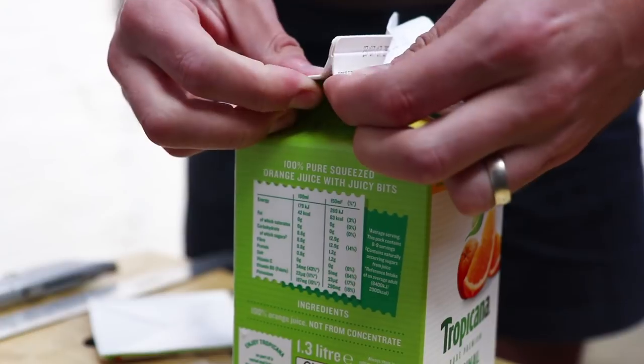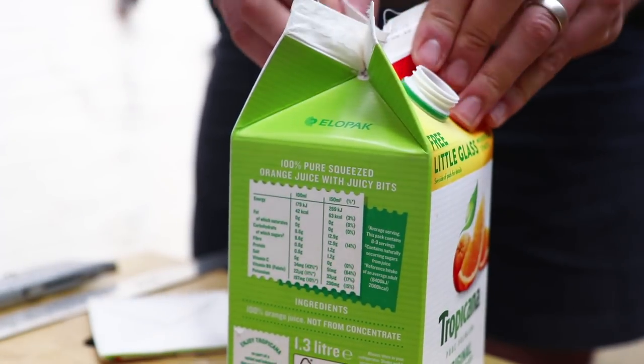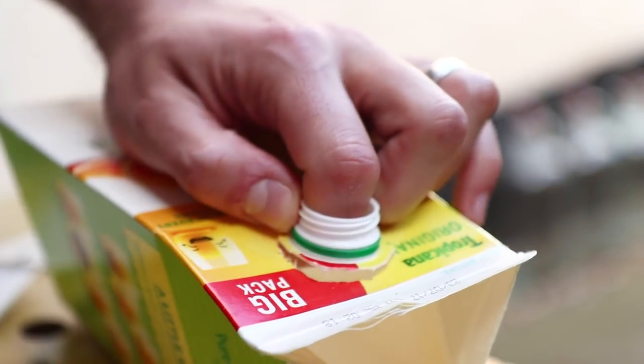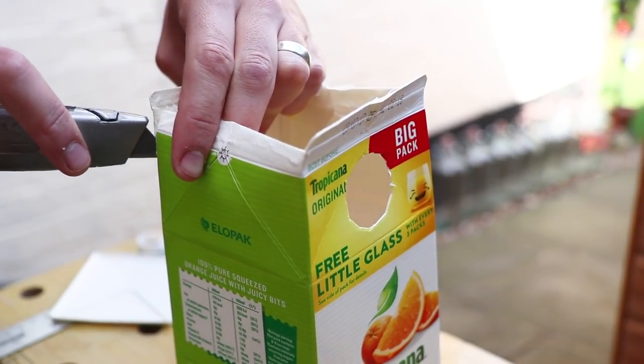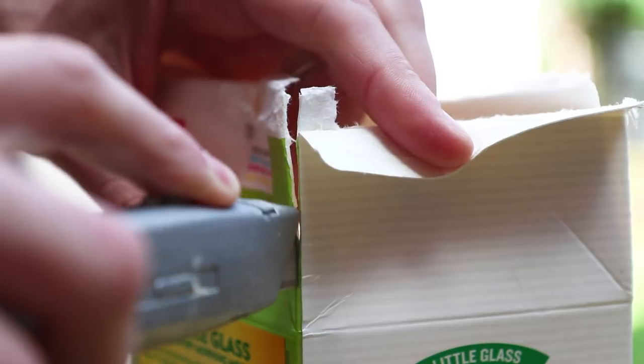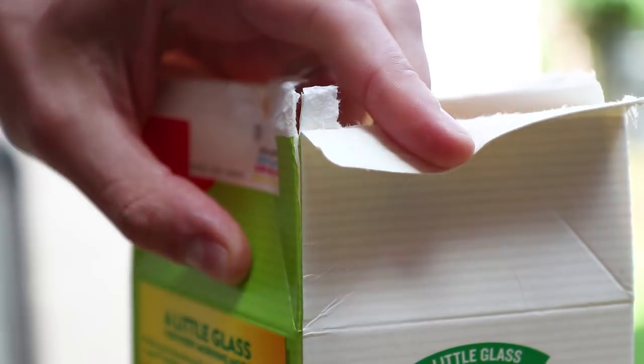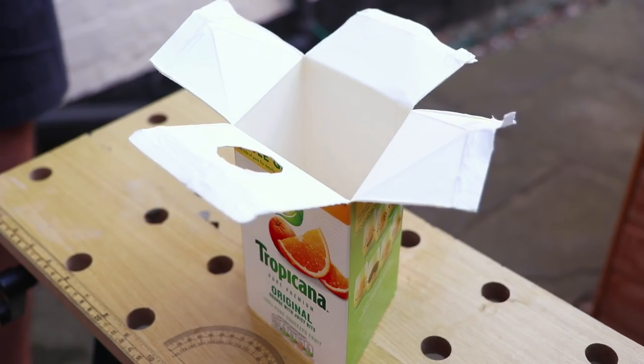Now stand your carton upright, open up the top and then remove the pouring spout, again carefully using a sharp knife. Now cut downwards on each corner of the open top down to where the original folds were. You should then be left with four flaps that you'll need to fold outwards.